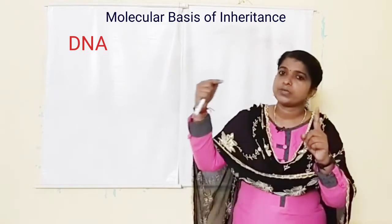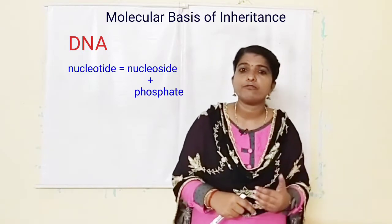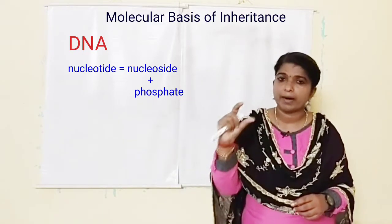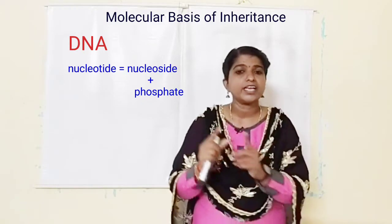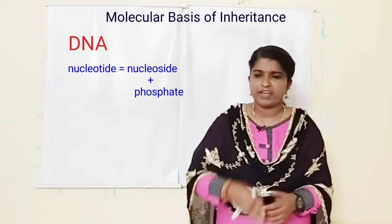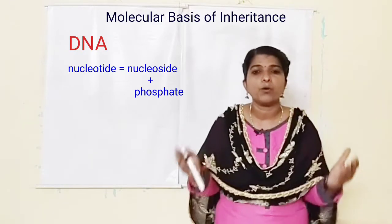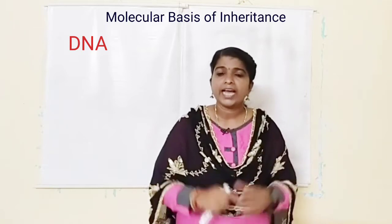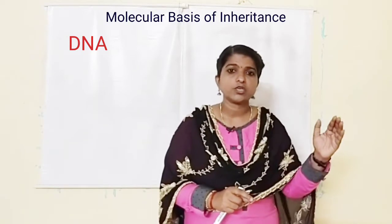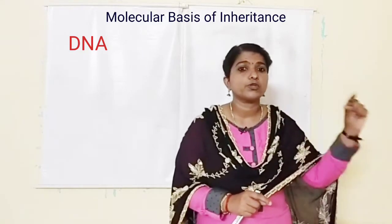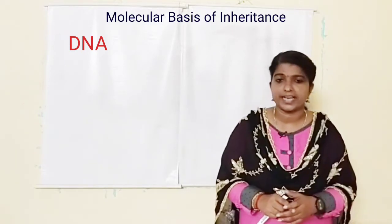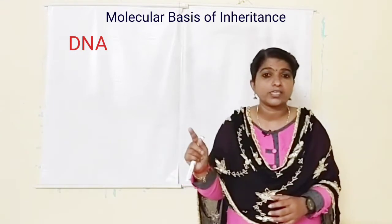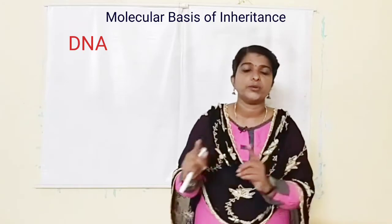This nucleoside combines with a phosphate group with the help of a phosphoester bond to become a nucleotide. When two nucleotides combine with the help of a phosphodiester bond, it becomes a dinucleotide. When many nucleotides combine, it becomes a polynucleotide. In a nucleotide, at one end of the pentose sugar we can see a free phosphate group — that is known as the 5' end. At the other end there is a 3'-OH on the pentose sugar — that is known as the 3' end of the polynucleotide chain.